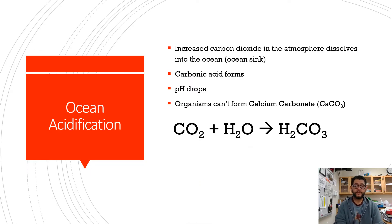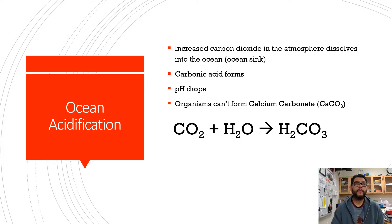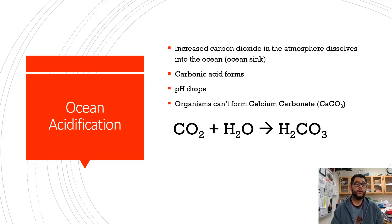As we mentioned, there's an increase in carbon dioxide occurring. One of the places that carbon ends up is in the ocean as an ocean sink — that's a place where carbon is going to be stored. The typical way this forms is you get carbonic acid, the pH drops, and so you can't form calcium carbonate in organisms such as coral or shells.